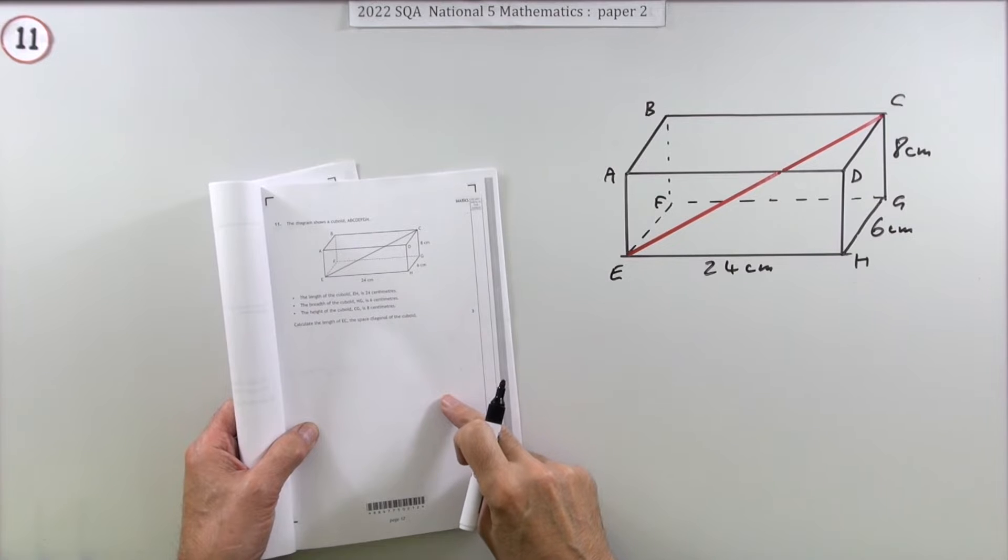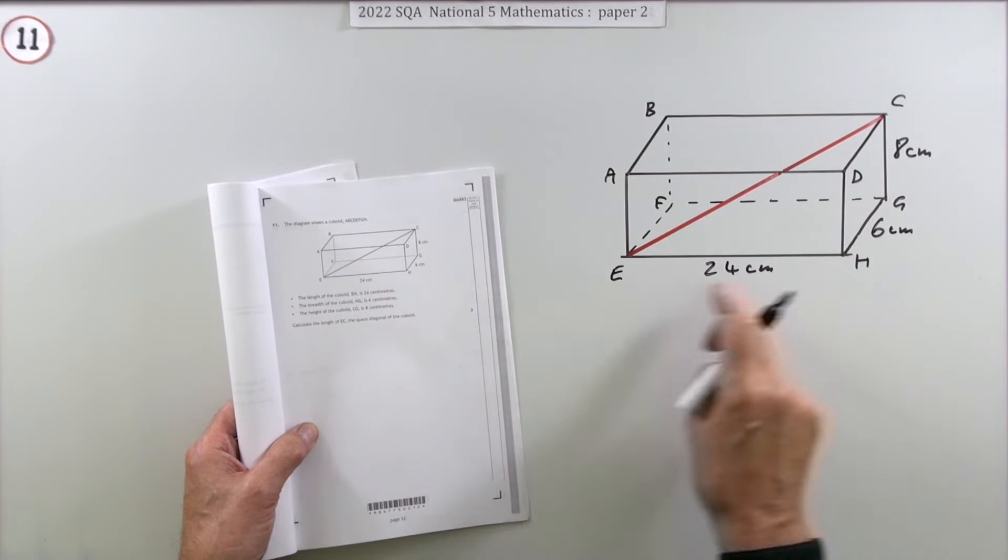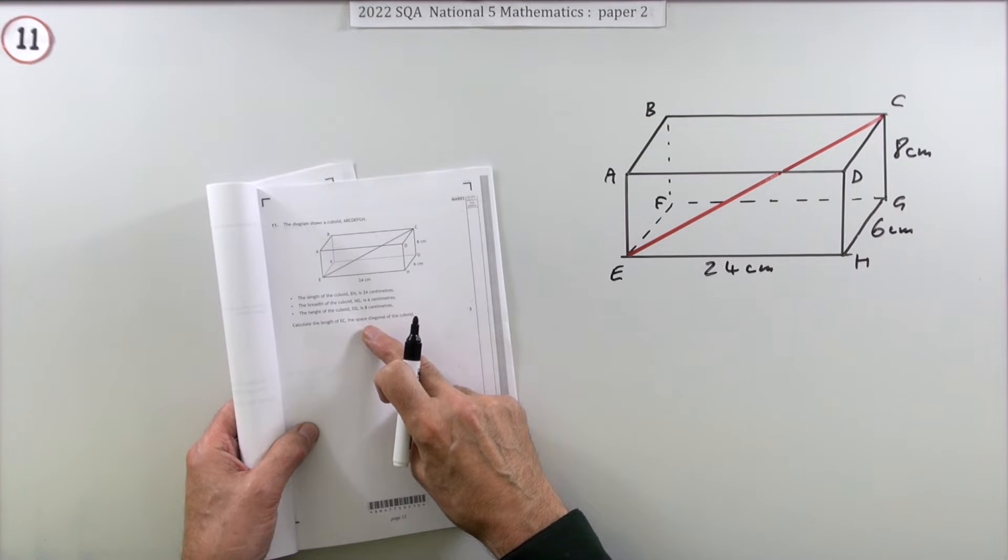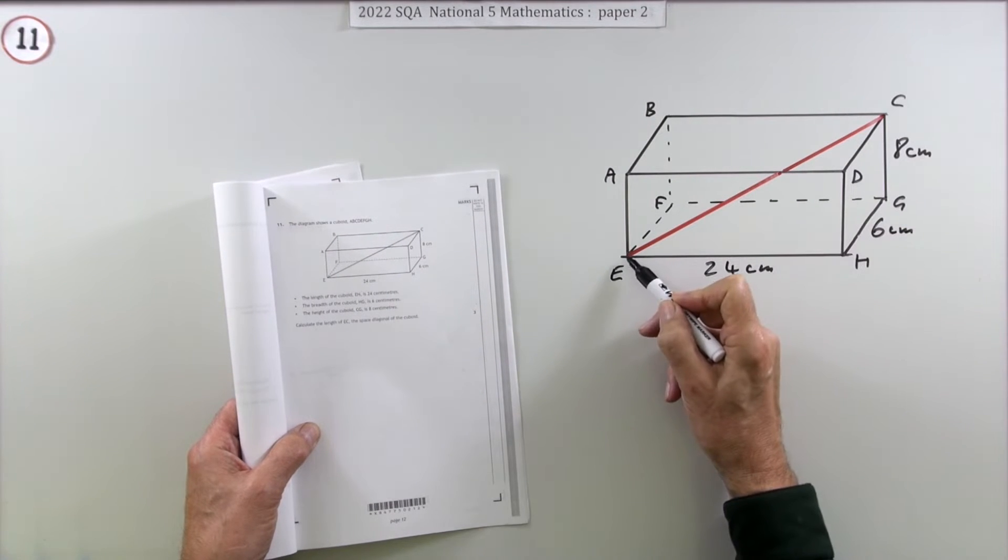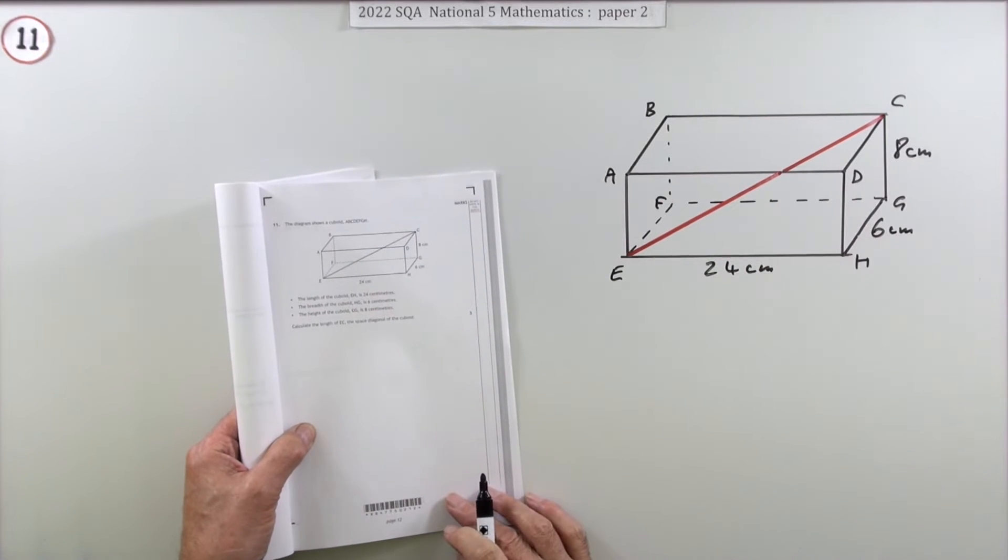Number 11 from paper 2 of the 2022 National 5. A 3-mark question where you've got a cuboid and you have to calculate the length of a space diagonal. That's not a diagonal that lies in one of the faces, but the diagonal that goes from one corner to an opposite corner through the space inside the cuboid.